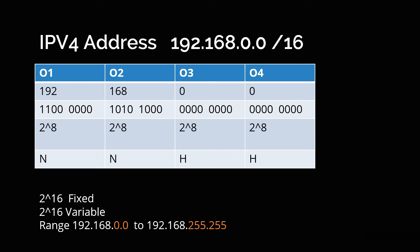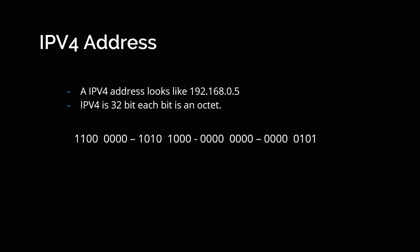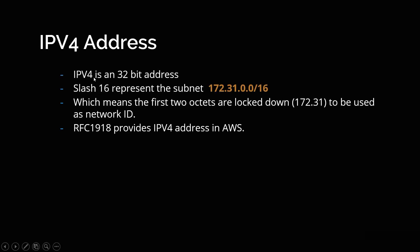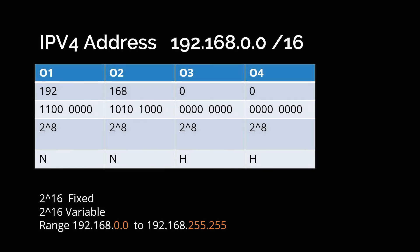Your entire IPv4 address is 32 bits. Since each octet is 8 bits, you have four octets of 2 to the power 8, which sums to 2 to the power 32 — a 32-bit IP address. Now when you say slash 16, that means the first 16 bits are assigned to the network. So the first 16 bits — which are 192 and 168 — are assigned to the network and will not change. The remaining 16 bits (32 minus 16) are assigned to the host and can vary.